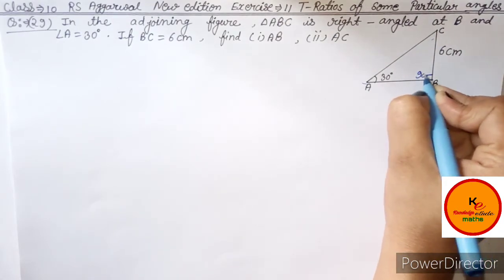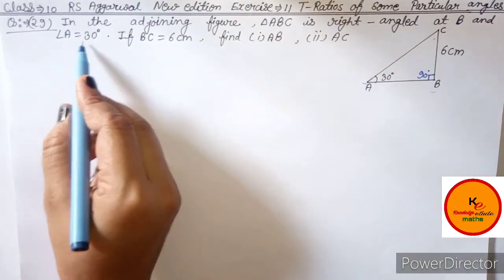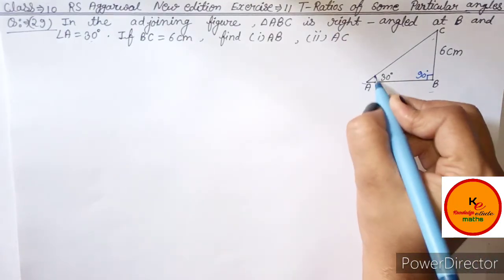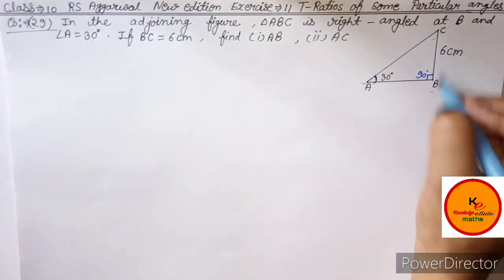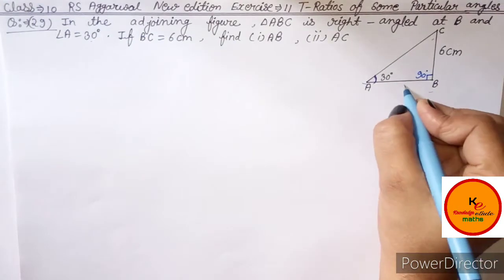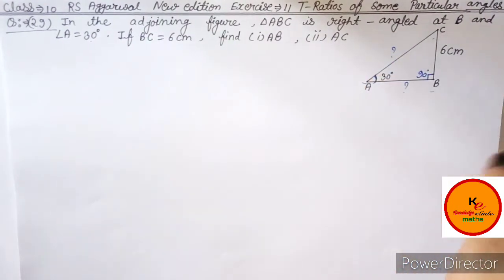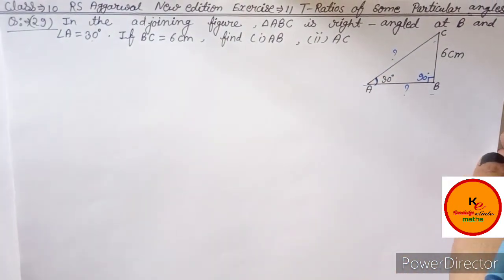B is the right angle, meaning B is 90 degree, and angle A is equal to 30 degree. BC is equal to 6 cm. Find AB and AC. In the question, as you can see here, 90 degree is given.